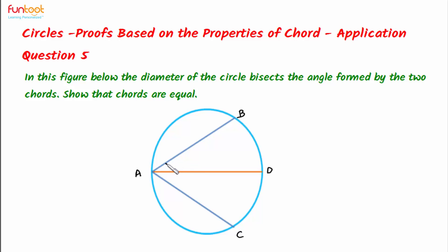That means this angle is equal to this angle. We have to show that AB and AC are equal chords.